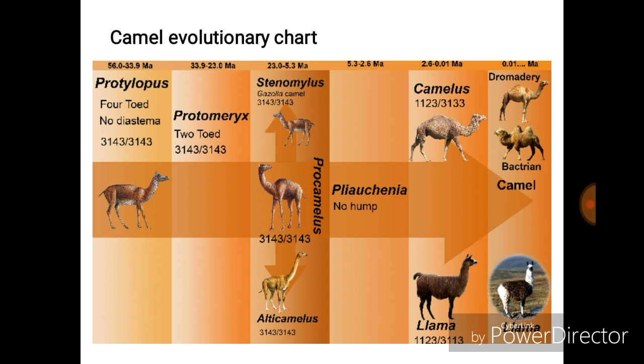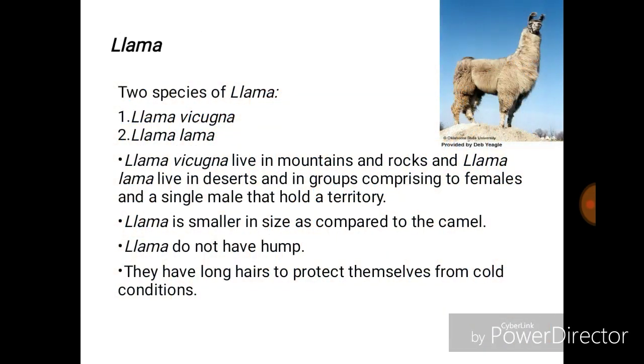This is the camel evolutionary chart. As you can see, first is Protylopus, second is Protomeryx, and from Protomeryx, Procamelus, Stenomylus, and Alticamelus originated. From Procamelus, Poebrotherium originated, and then Camelus and Llama. The Llama has two species: Vicugna and Llama.